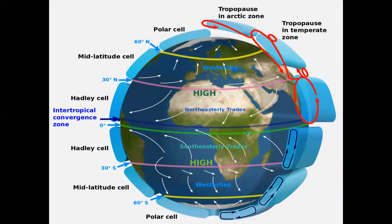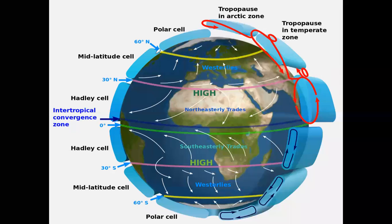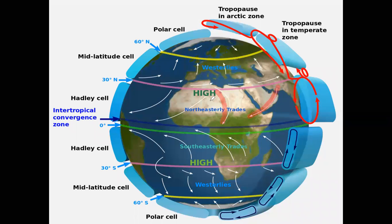The figure on the screen shows the location and the movement of the trade winds. Trade winds in the northern hemisphere are northeasterly trades, whereas in the southern hemisphere they are known as the southeasterly trade winds or southeast trade winds.